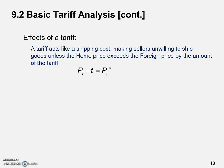The tariff affects the price. P subscript star means the price in foreign after the tariff is imposed. As you can see, Pt, the price in home, is going to be higher than that in foreign, and the difference between these two prices would be the tariff rate.